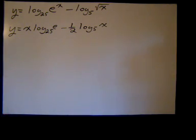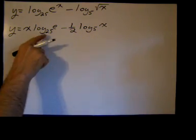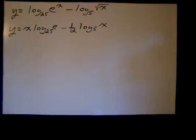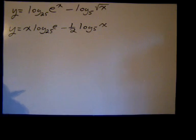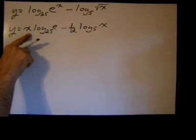I really don't see much else to do except to recognize that the log base 25 of e is a constant. There's no product rule going on here, so we're just really taking the derivative of x when we do this.